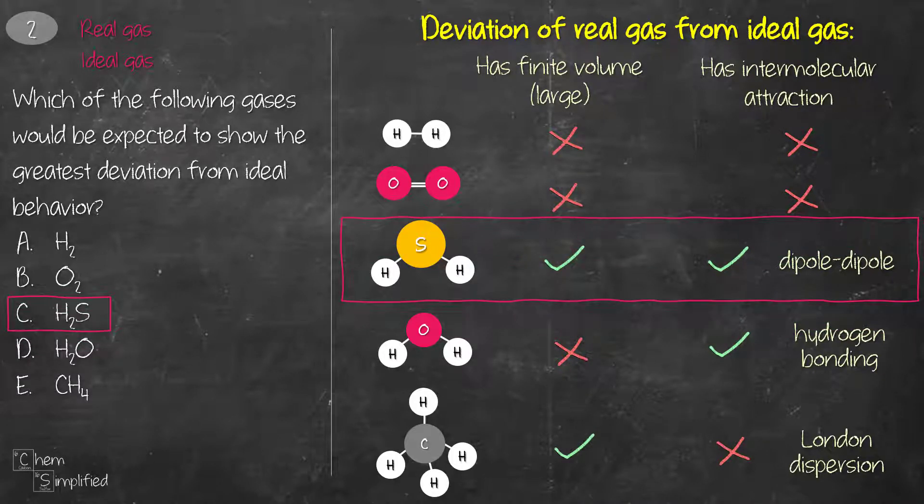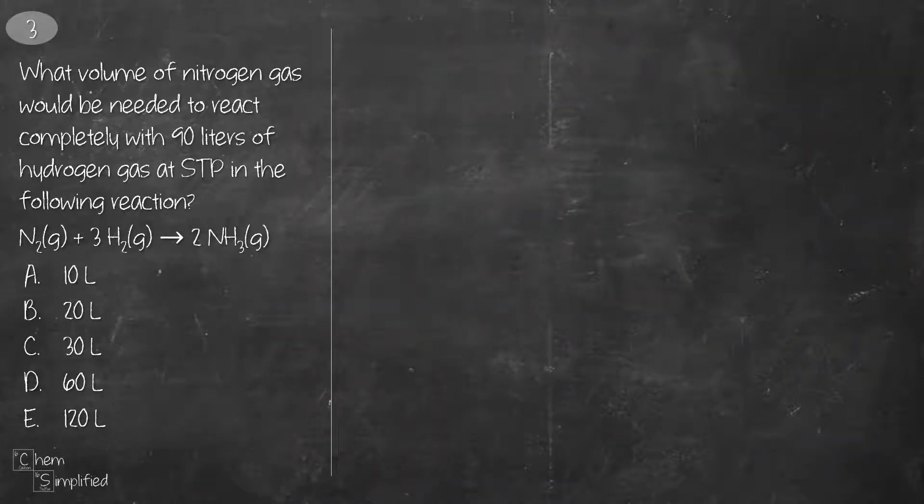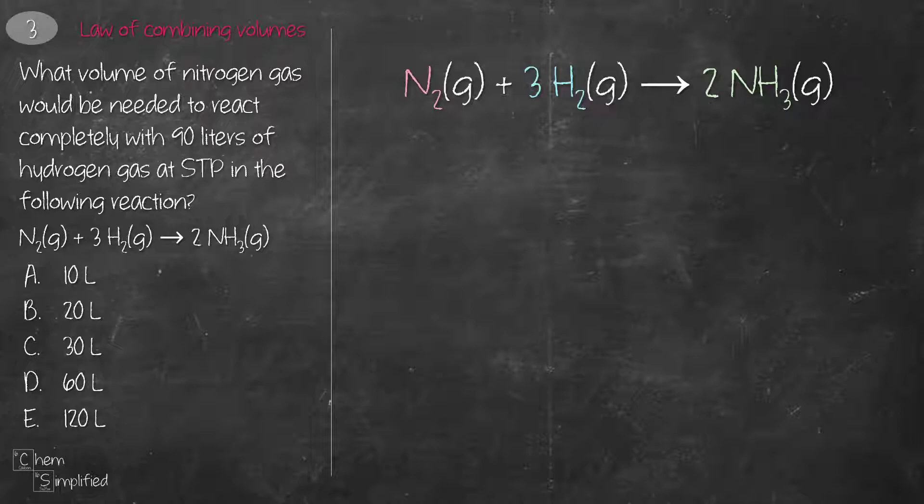This question involves law of combining volumes, since all the reactants and products in the equation are gases at the same temperature and pressure. That means the volume of gases are proportional to the molar volumes. The ratio of nitrogen to hydrogen gas is 1 to 3. Since we're given the volume of hydrogen is 90 liter, we can work backwards and figure out that we're going to need 30 liter for nitrogen.